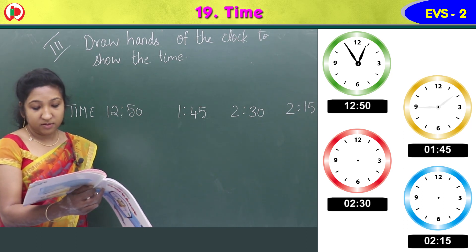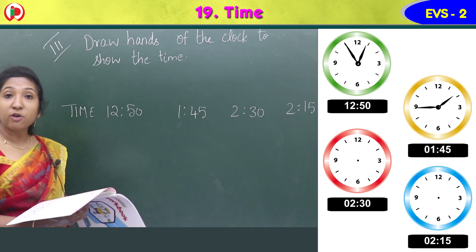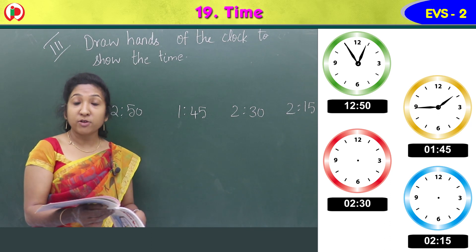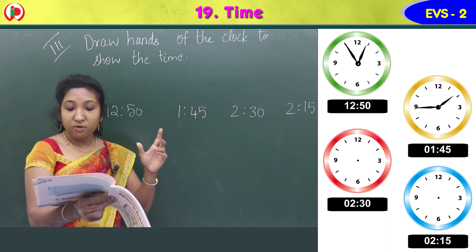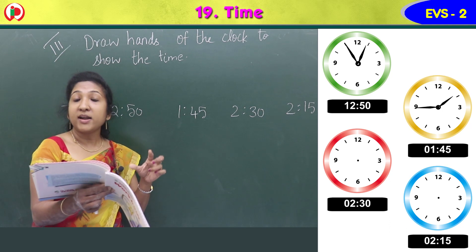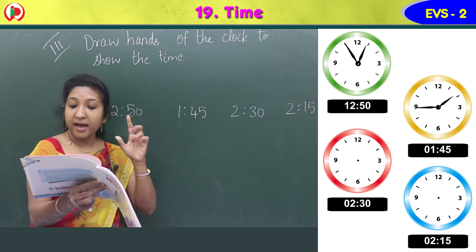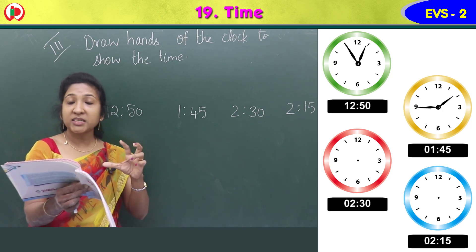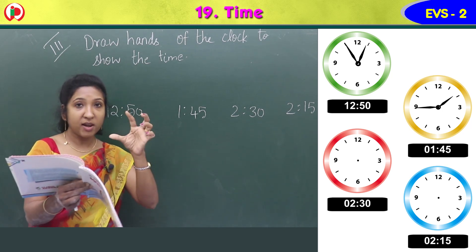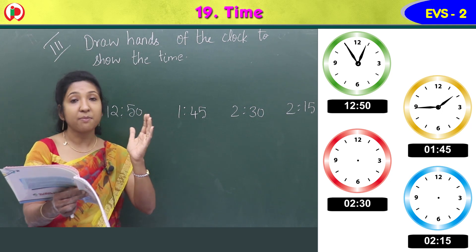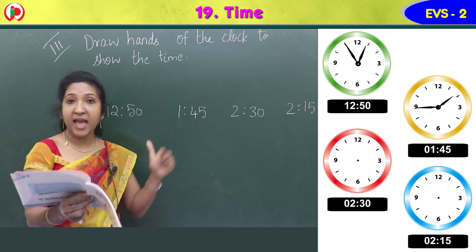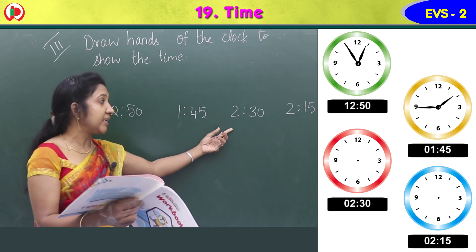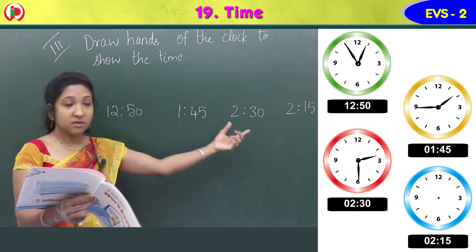Next, draw 1:45. The hour hand, the smaller one, points at 1. Then 45 means the minute hand comes at 9. So the minute hand will be at 9 and the hour hand at 1. Draw the hands of the clock accordingly.